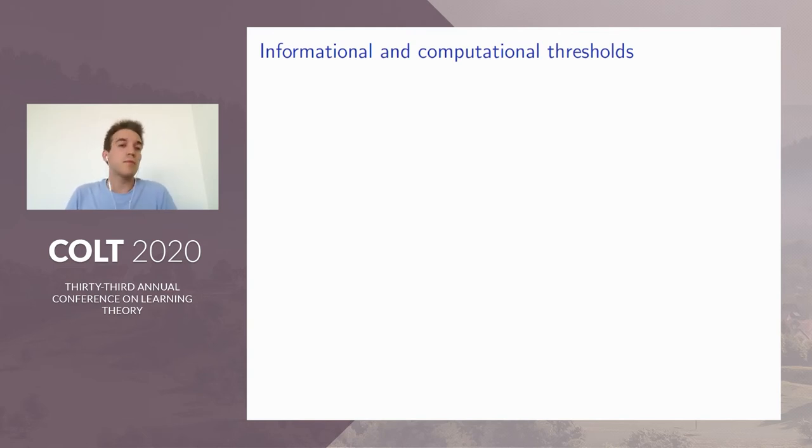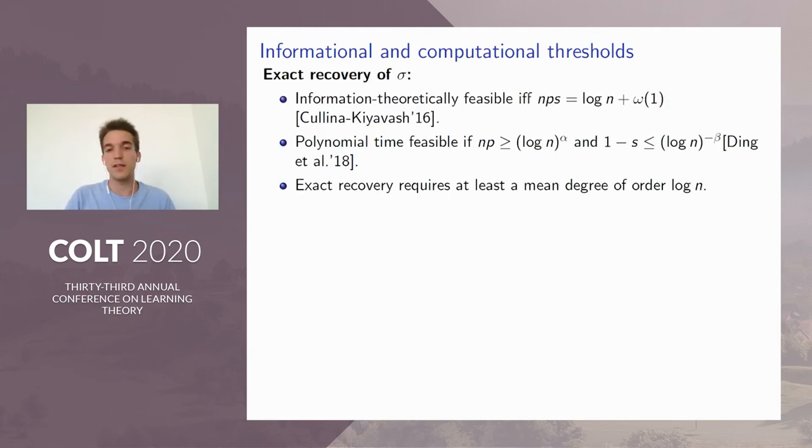As I said, this is a planted model, so we have to plant a permutation. To do so, we shuffle the labels of G2 prime uniformly at random to form G2. Formally, this can be written as a matrix multiplication with a planted pi here, which is the planted matrix of a uniform permutation sigma. Now that the problem is correctly defined, let me give you a few results that are previously known. The main problem that was studied until now is the exact recovery of sigma.